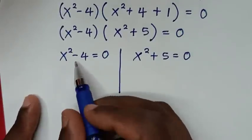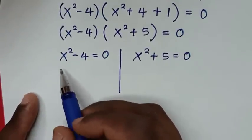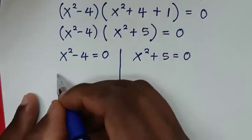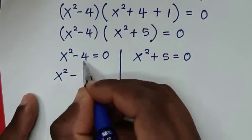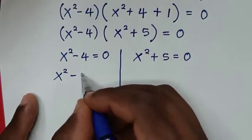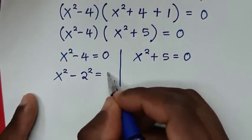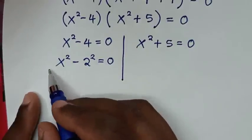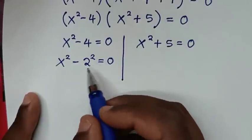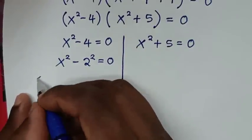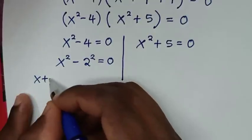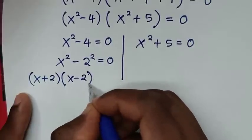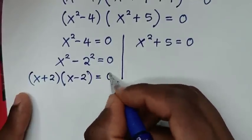From the first solution, x² - 4 = 0 can be written as x² - 2² = 0. Applying the difference of squares rule, this becomes (x + 2)(x - 2) = 0.